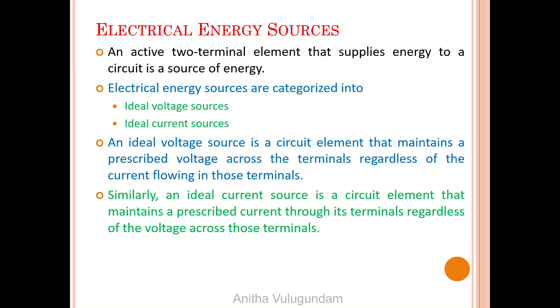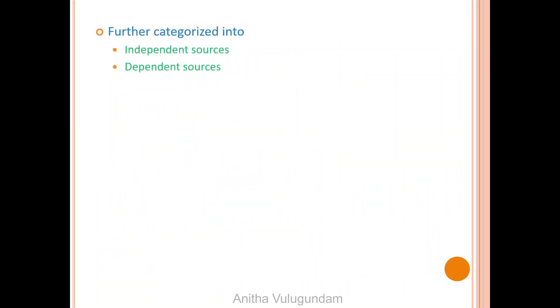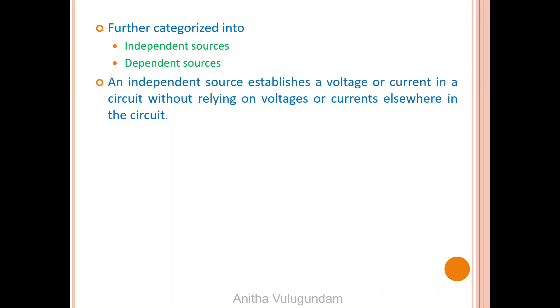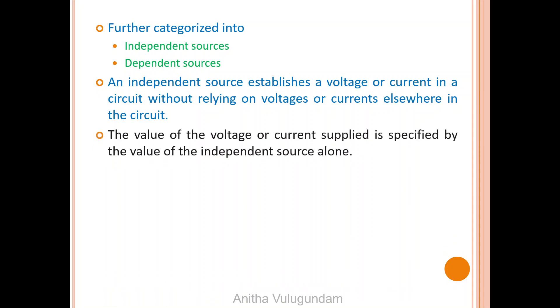These voltage sources are not at all practical — they are just idealistic in nature. They are further classified into two types: independent sources and dependent sources. An independent source establishes a voltage or current in a circuit without relying on voltages or currents elsewhere in the circuit. The value of voltage or current supplied is specified by the value of the independent source alone.